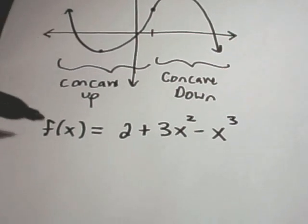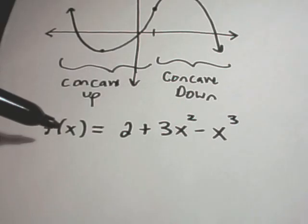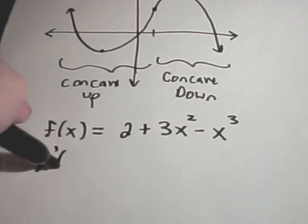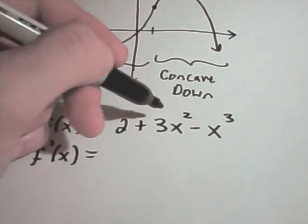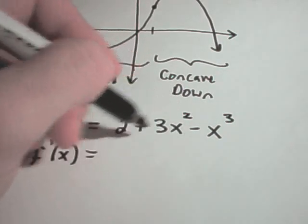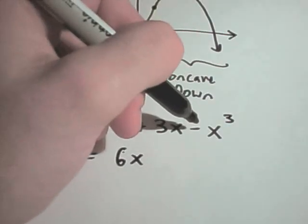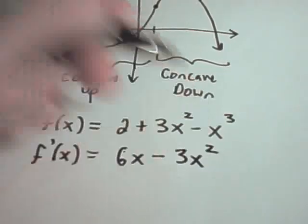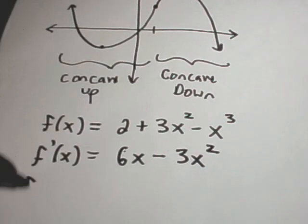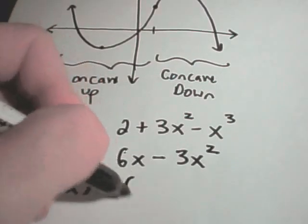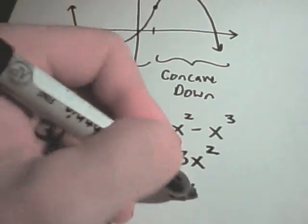Suppose we have the function f(x) = 2 + 3x² - x³, and we're trying to figure out where this function is concave up or concave down. The first thing we do is take the derivative: the derivative of 2 is 0, the derivative of 3x² is 6x, and the derivative of -x³ is -3x². The next thing we do is take the second derivative, which is simply 6 - 6x.